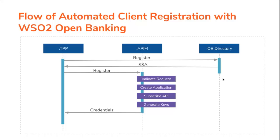Next, I am going to talk about the flow of Automated Client Registration with WSO2 OB. As the first step of client registration, the TPP should obtain an SSA from the OBIE directory. Then the TPP should send a POST request including the SSA as a claim in the payload to the client registration endpoint in WSO2 Open Banking. The SSA is sent as a signed JWT which contains the client metadata obtained from the OBIE directory.